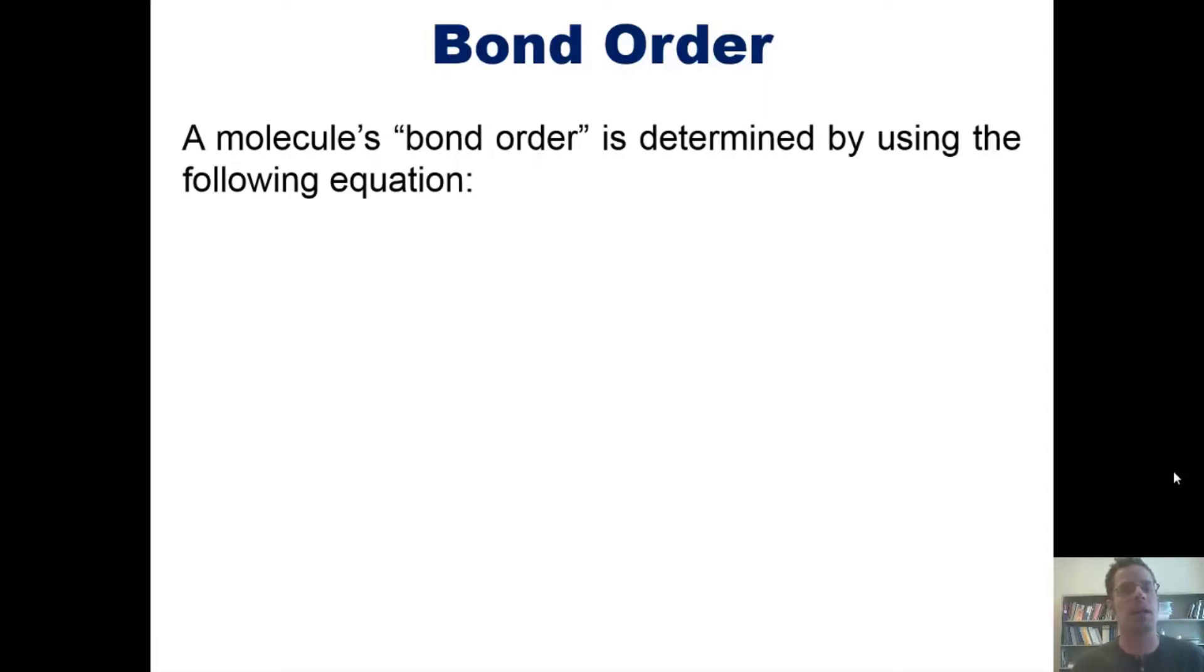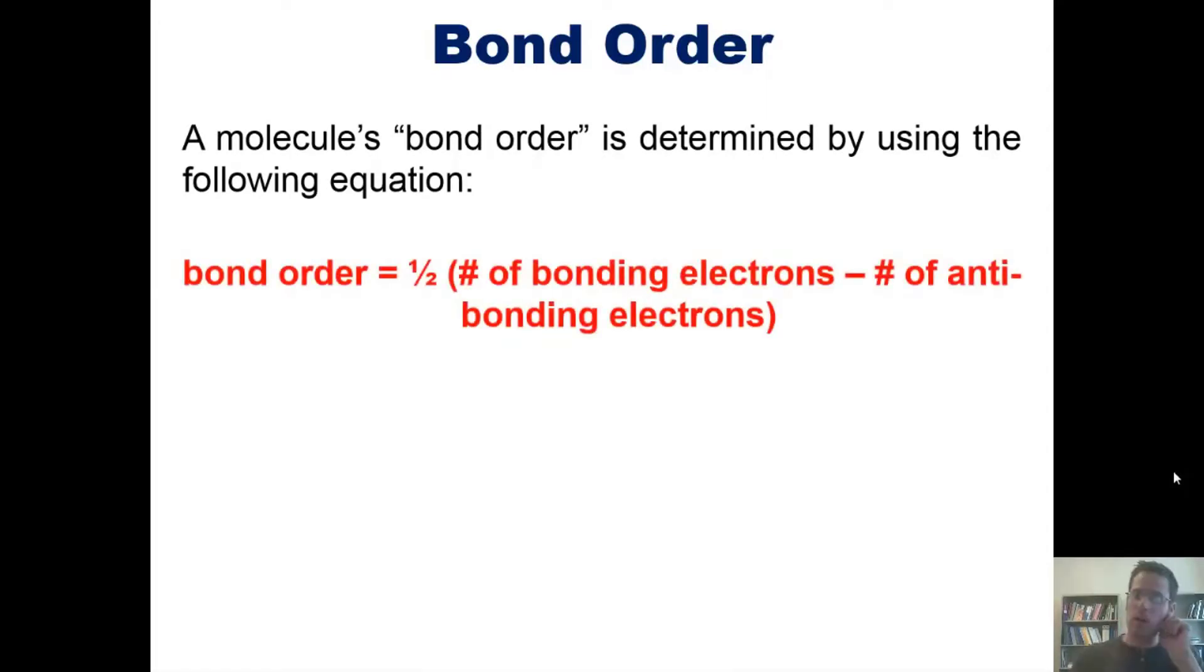A molecule's bond order is determined by using the following equation. Bond order equals one-half times the number of bonding electrons minus the number of antibonding electrons. If you look at this equation, you'll notice that the more electrons you have in bonding molecular orbitals, the larger the bond order is. The more electrons you have in antibonding orbitals, the smaller your bond order is.